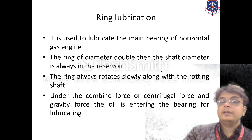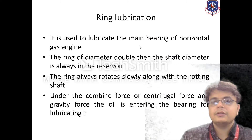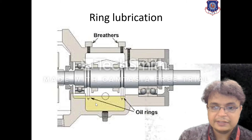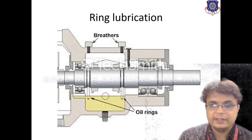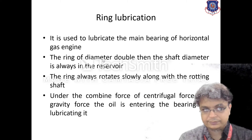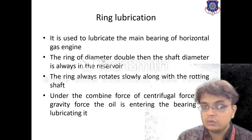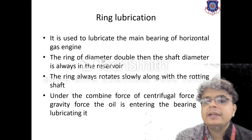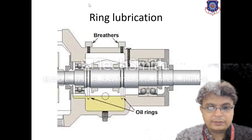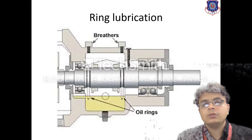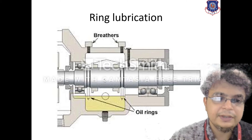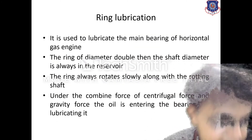Next is ring lubrication. It is used to lubricate the main bearing of horizontal engines. Oil rings are provided — these two oil rings have a diameter double that of the shaft and are always kept in the reservoir. The ring rotates slowly along with the rotating shaft, and under the combined force of centrifugal force and gravity, the oil enters into the bearing, providing proper lubrication.